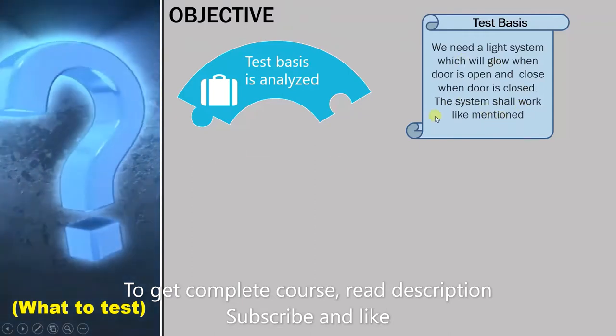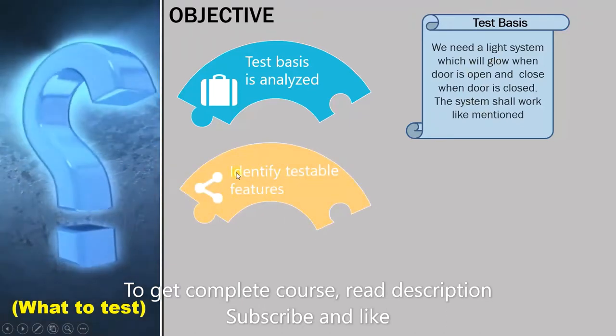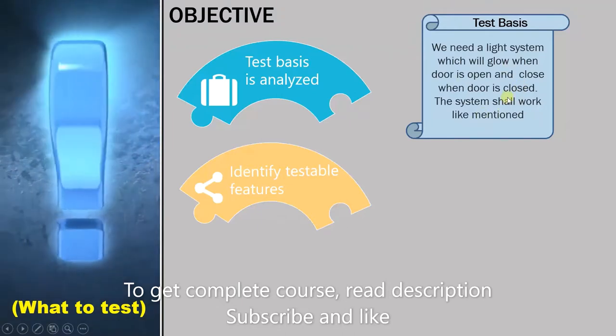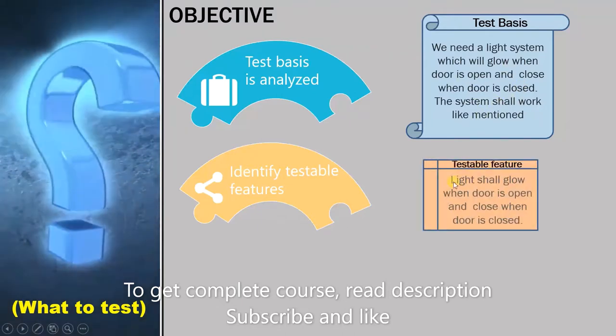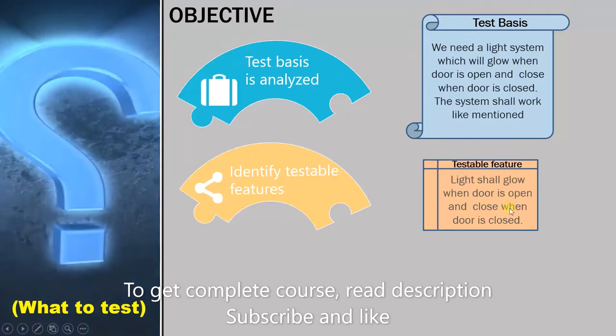From this we have to identify testable features. So we have to extract testable features from this requirement. This is how we do it: light shall glow when the door is open and close when the door is closed.